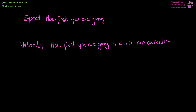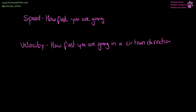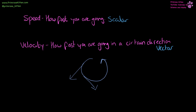There is a key distinction between the terms speed and velocity. Speed is how fast you are going — it is a scalar quantity. Velocity is how fast you are going in a certain direction — it is a vector quantity. If something is going in a circle, for example orbiting a planet, it can be going at a constant speed, but it is not going in the same direction. It is constantly changing direction, which is why you can have a change in velocity while going at the same speed.